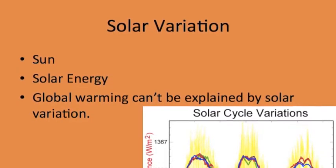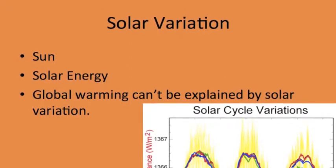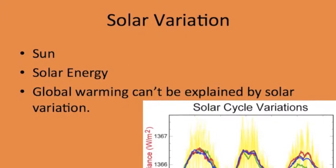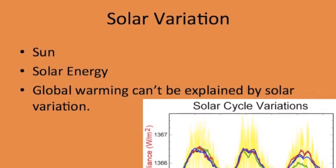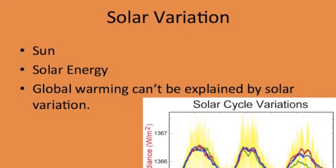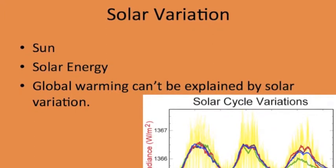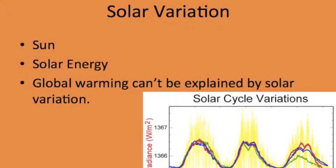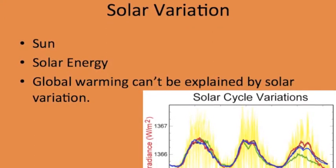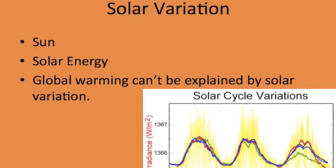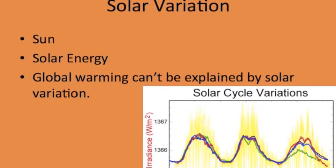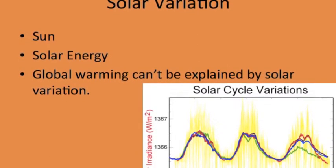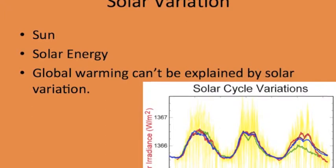On our next slide, we are talking about solar variation. The Sun is our main source of energy, and without it, none of us would exist. Since solar variation has been a pattern since 1750, it is not the primary effect on the increase of global warming in recent years.